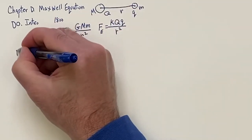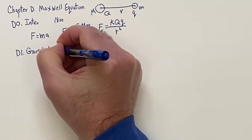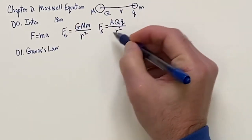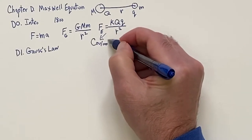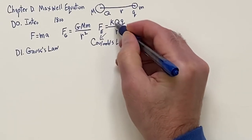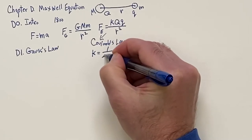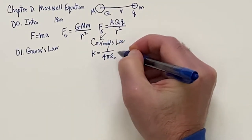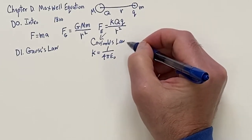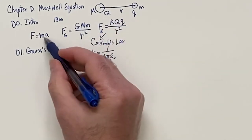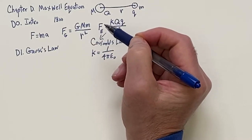Let's go to D1: Gauss's Law. This equation in this form is Coulomb's Law. The constant k lowercase is sometimes written as 1 over 4 pi epsilon naught, where epsilon naught is another constant. Notice that when you use F equals ma with these, you can get dynamics problems to solve.